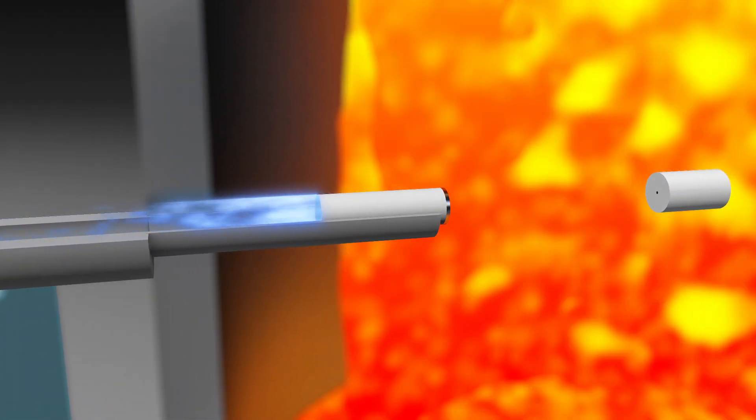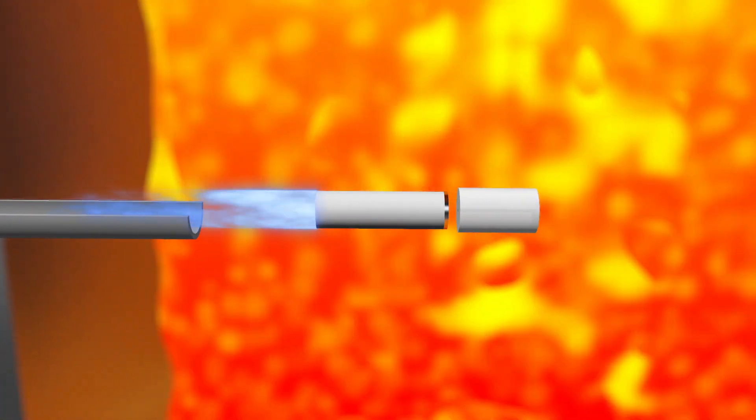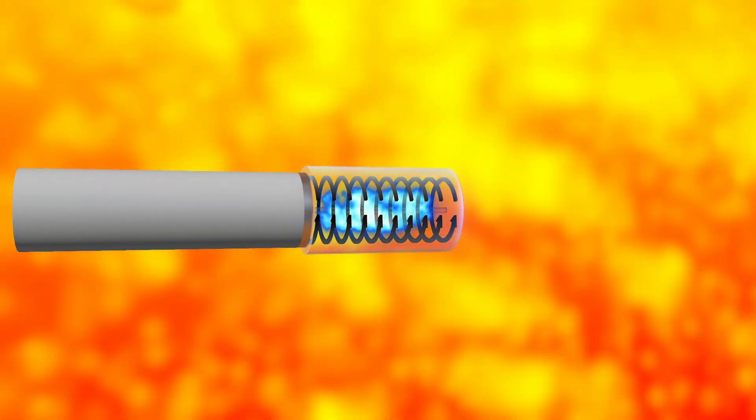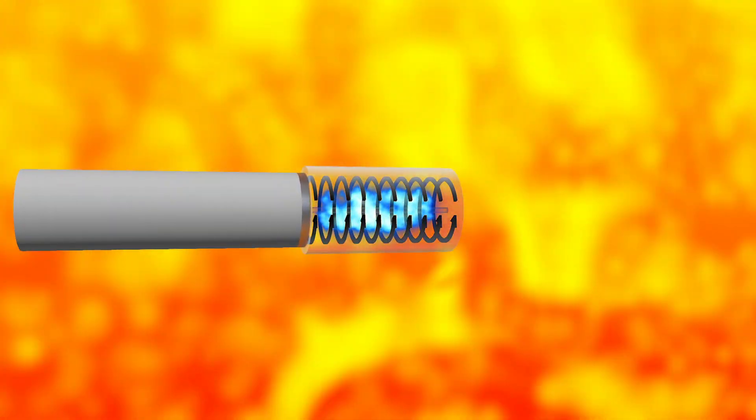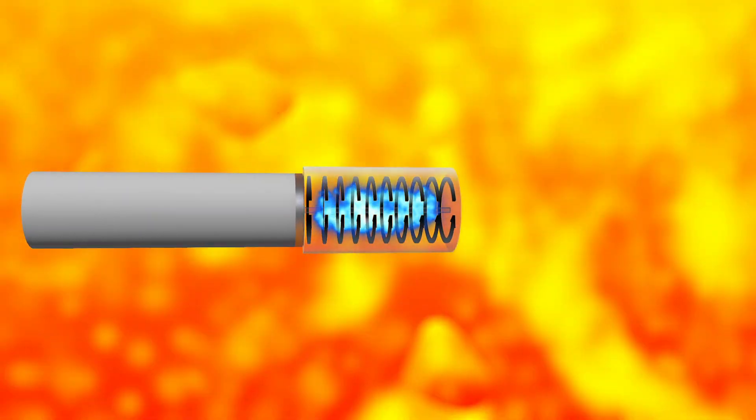Each projectile delivers a tremendous amount of kinetic energy to the deuterium fuel target upon impact. At the moment of impact, the fuel target is magnetized to confine, insulate, and reduce energy loss during the rapid compression of the deuterium fuel.